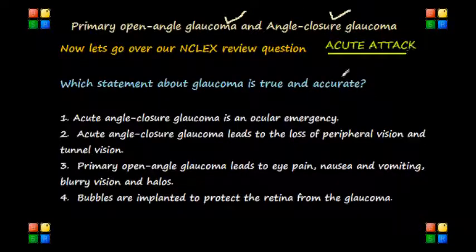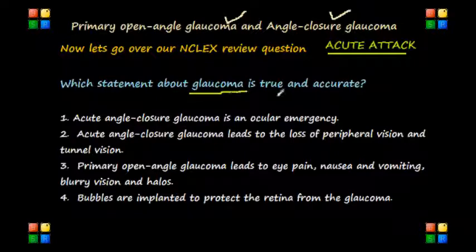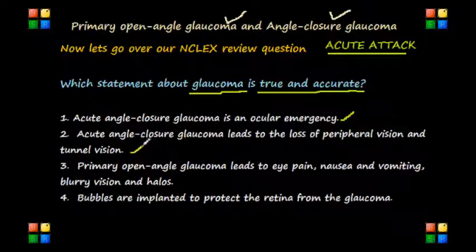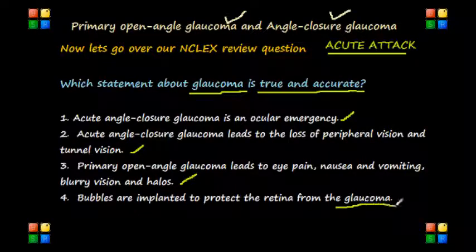Now let's look at our NCLEX review question. Which statement about glaucoma is true and accurate? Number one: acute angle closure glaucoma is an ocular emergency. Number two: acute angle closure glaucoma leads to the loss of peripheral vision and tunnel vision. Number three: primary open angle glaucoma leads to eye pain, nausea and vomiting, blurred vision, and halos. And number four: bubbles are implanted to protect the retina from glaucoma.